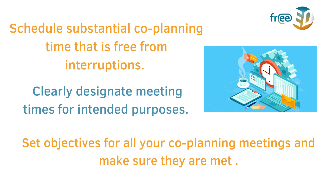Clearly designate meeting times for intended purposes — for example, co-planning activities in person or online, co-creating resources, evaluating student learning, or anything else. For efficient scheduling, set up a recurring meeting on your calendars. Google Calendar works great, but it's not the only one. Make sure there is a designated meeting link so you both know where you need to be in any situation. Also, it is very important to set objectives for all your planning meetings and make sure that they are met. Once you and your co-teachers start chatting, it can be easy to get off topic. To make sure the regular planning meeting covers everything it needs, follow a planning checklist.